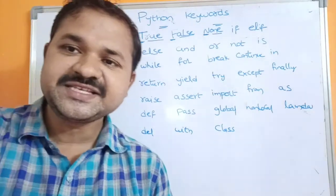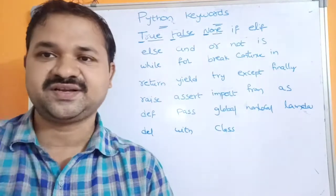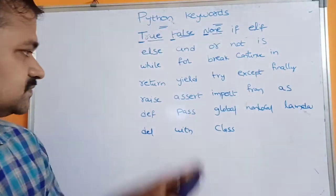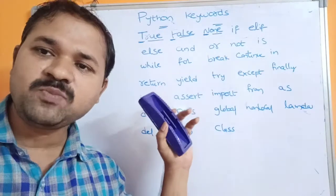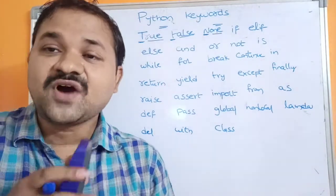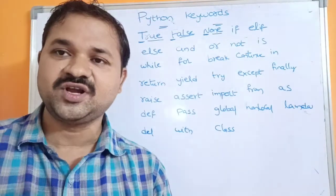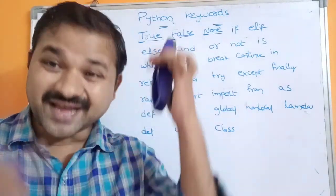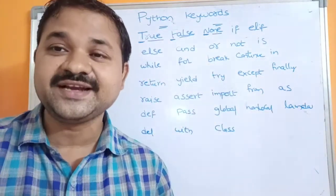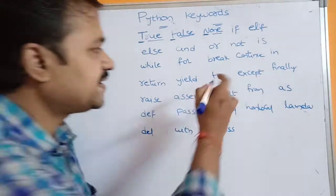Next is the return keyword. It is mainly useful in order to return a value from a called function to the calling function. With return, we can return only one value. The yield keyword solves this limitation — if we want to return more than one value, we use yield. The yield keyword allows us to return a generator, which contains a collection of values.